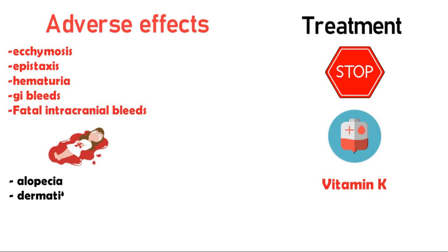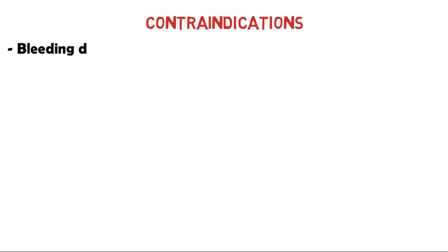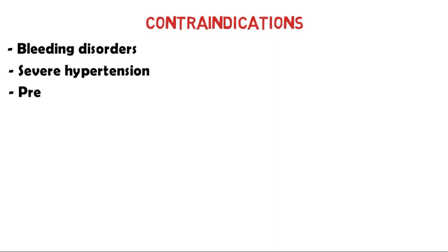Other side effects are alopecia which is hair loss, dermatitis, and it can also cause diarrhea. Warfarin is contraindicated in bleeding disorders because it can further worsen the bleeding condition in patients. It is also contraindicated in severe hypertension as it can increase the risk of fatal intracranial bleeds. It should also be avoided in pregnancy because when given in early pregnancy it can cause fetal warfarin syndrome.